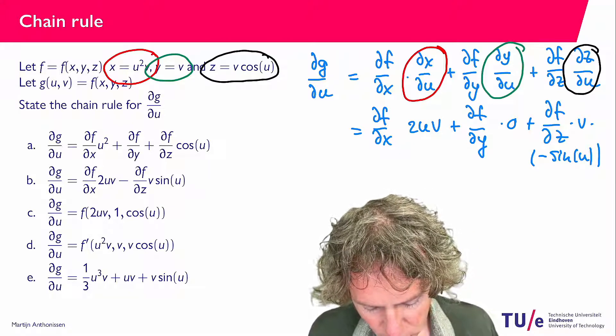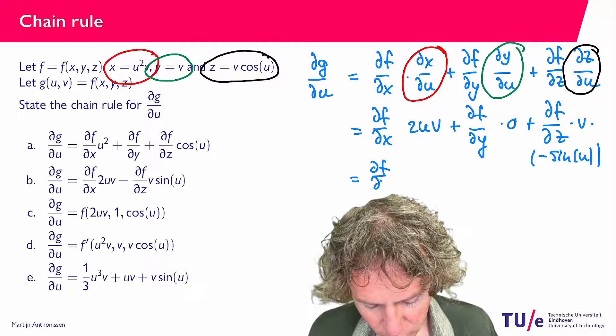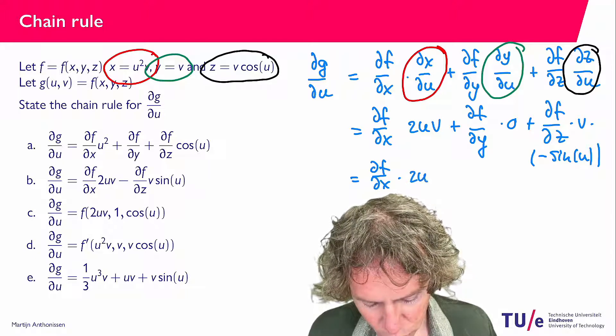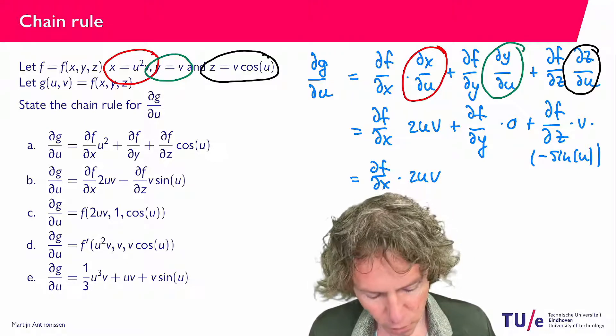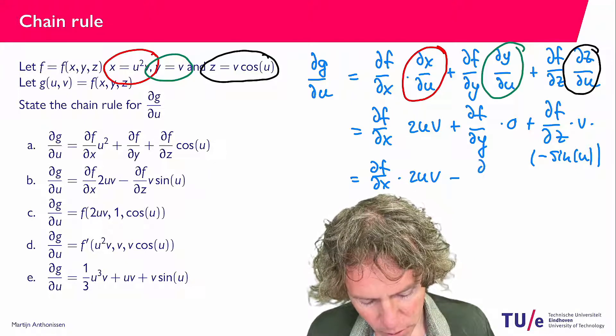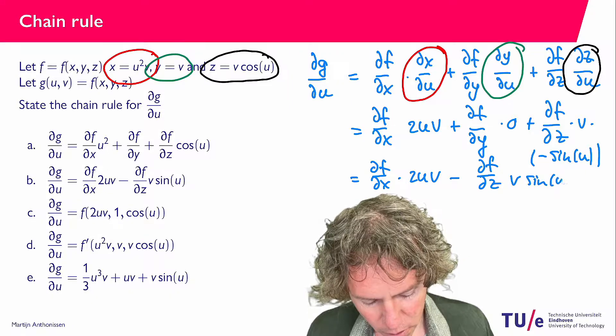...equals ∂f/∂x times 2uv. The ∂f/∂y drops out, and we get minus ∂f/∂z times v sine u.